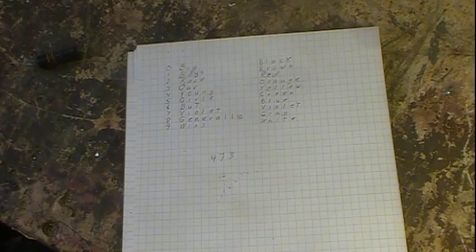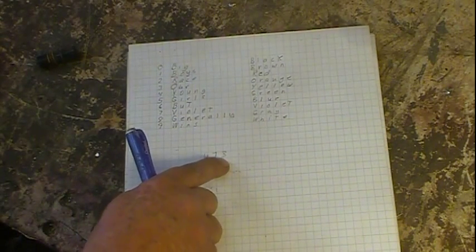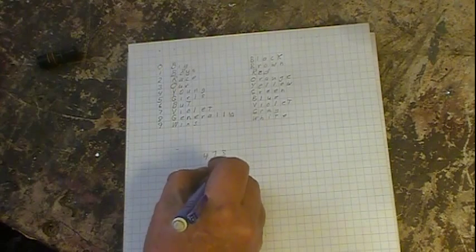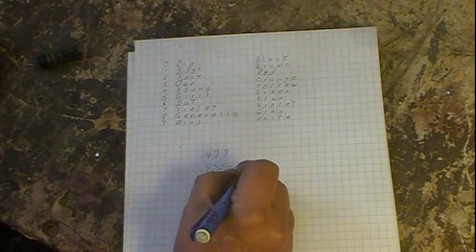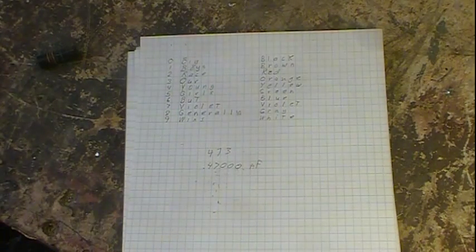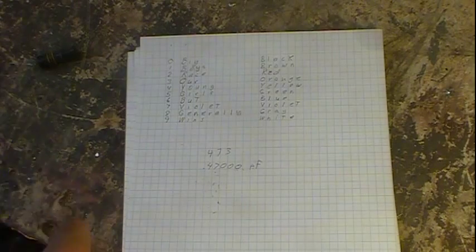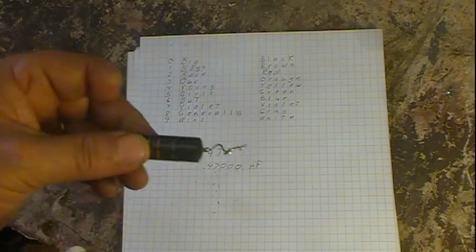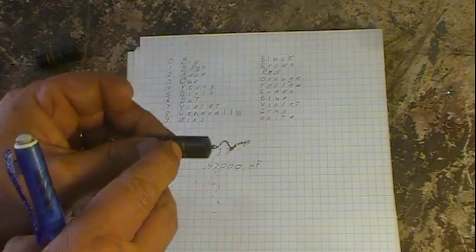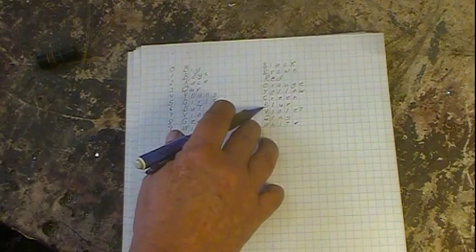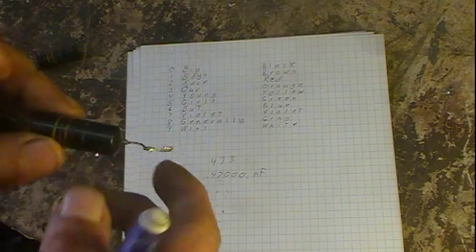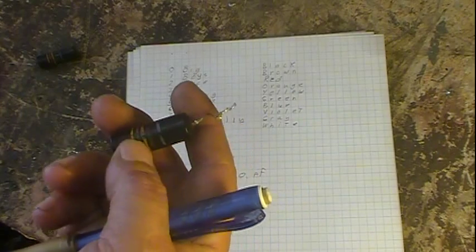What does that mean — is it 473 microfarads? Well, the third number is the number of zeros, so another way of looking at that is 47,000. All capacitors are measured in picofarads, so it's 47,000 picofarads. We have a blue band for our voltage, which follows the same listing. Blue is 6, so that's 600 volts — it's hundreds of volts.